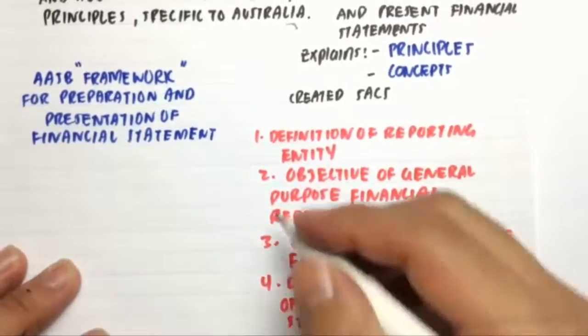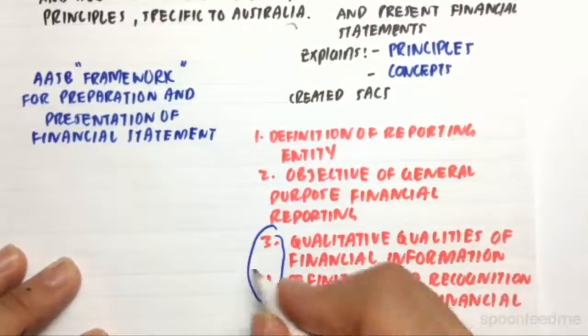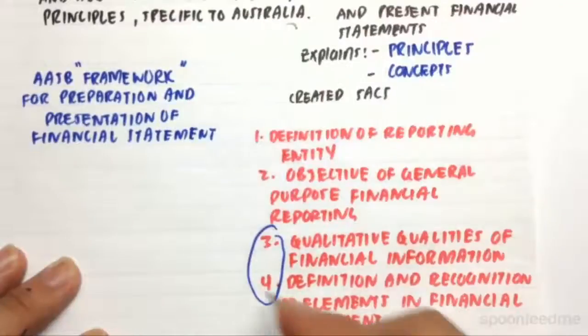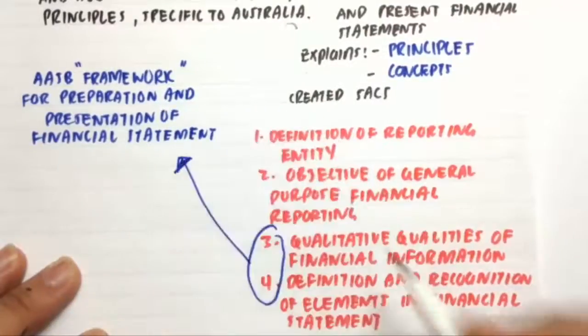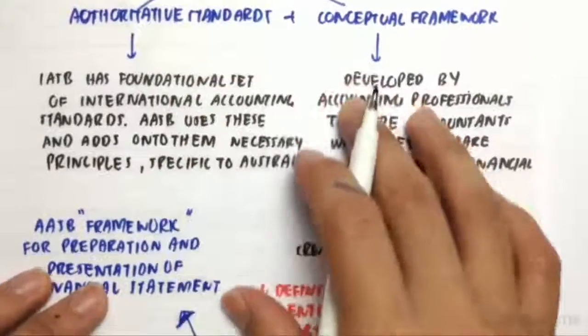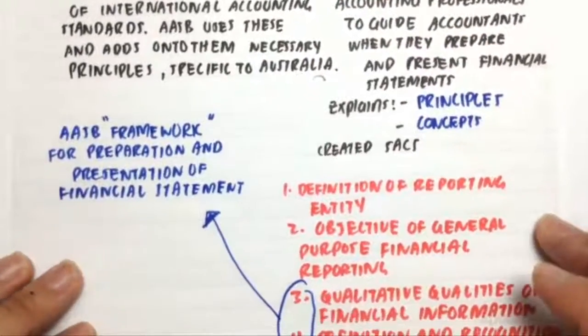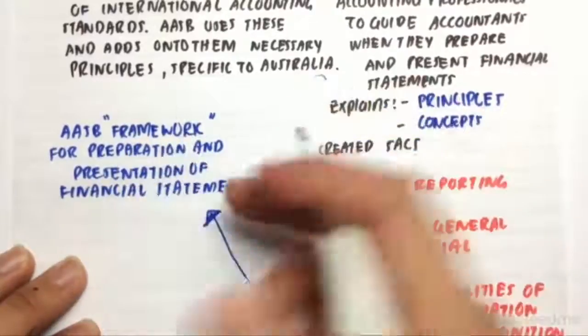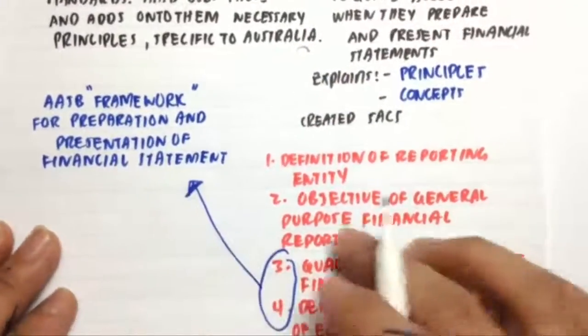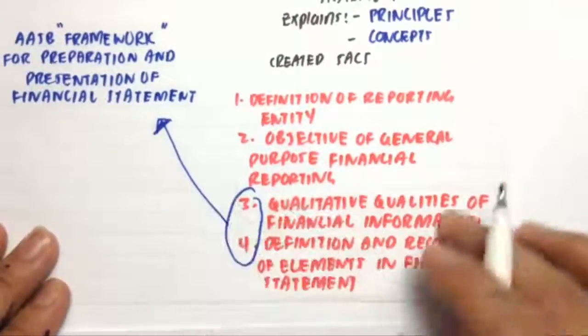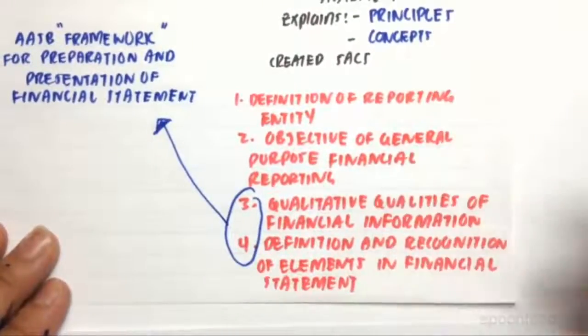However, during recently, the AASB has incorporated SACs 3 and 4 and made that an authoritative standard in the Australian Accounting Standards. And now it's called the Framework for Preparing and Presenting Financial Statements. And now we have to stick to information provided in these previous SACs 3 and 4.